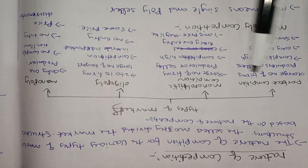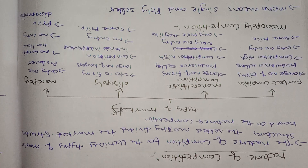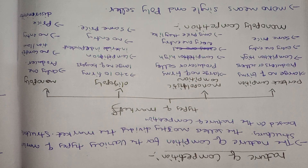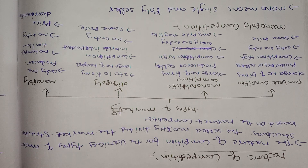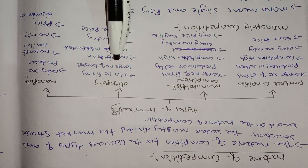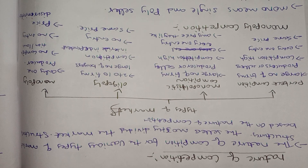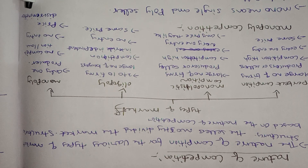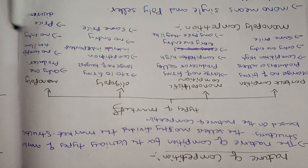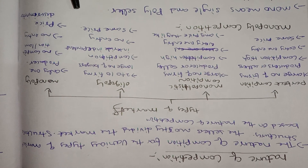In perfect competition, there is the same price across many businesses. In monopolistic competition, sellers can set any price they like. In oligopoly with two to ten firms, the same price may apply. In monopoly, the price is set by the single seller, and price discrimination is also possible.